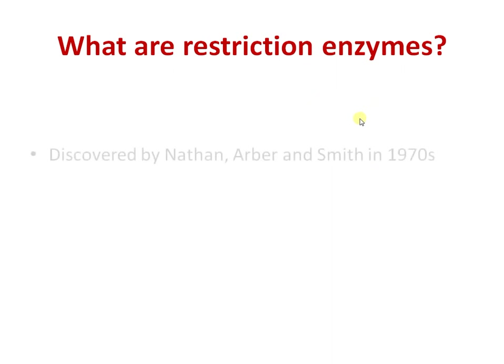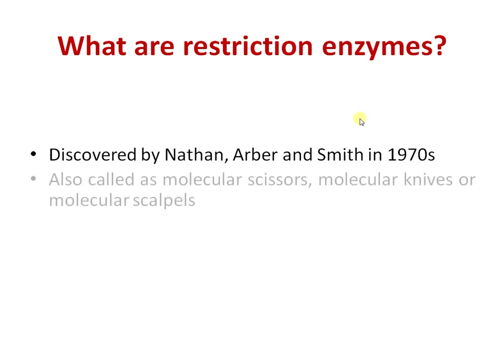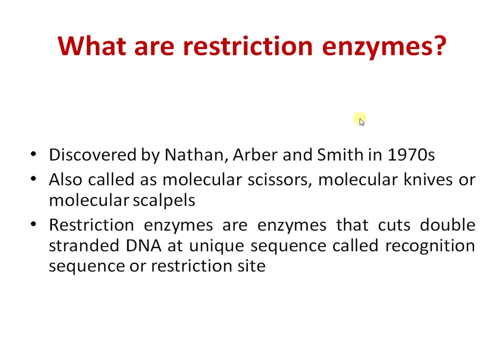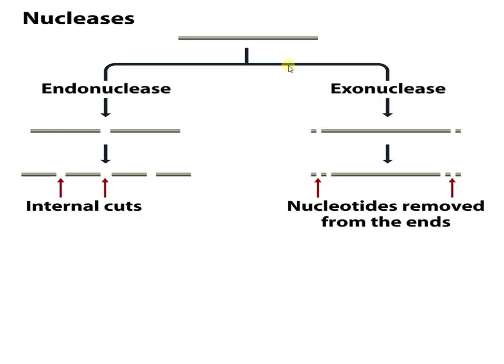This enzyme was discovered by Nathan, Arber, and Smith in the 1970s — one of the most important discoveries that marked the beginning of recombinant DNA technology. Restriction enzymes are also called molecular scissors, molecular knives, or molecular scalpels due to their ability to cut DNA molecules at unique sequences called recognition sequences or restriction sites.